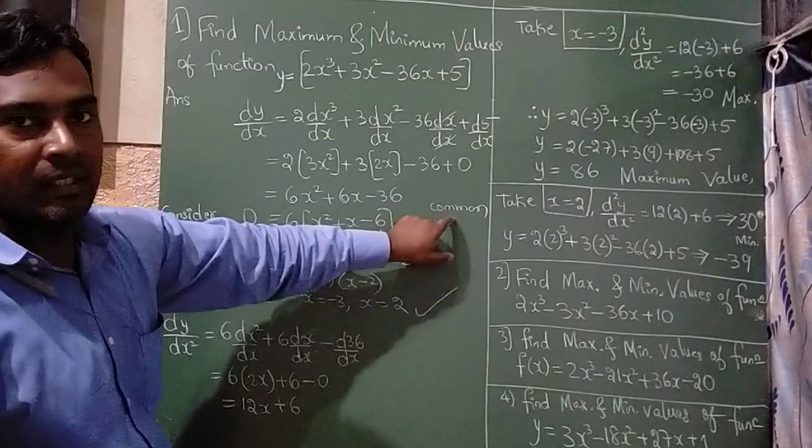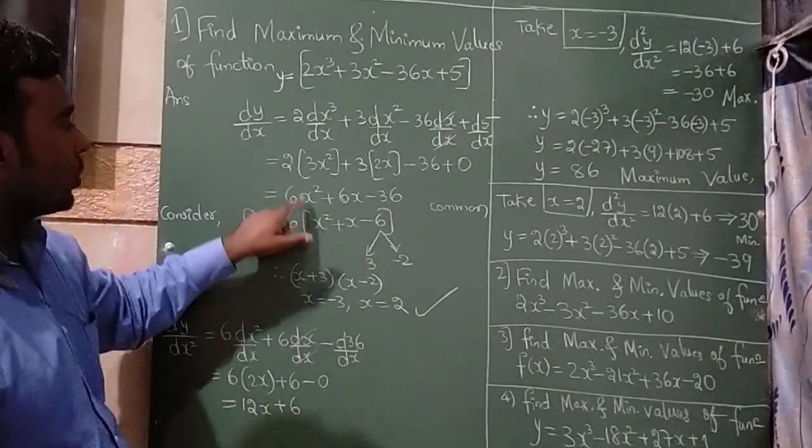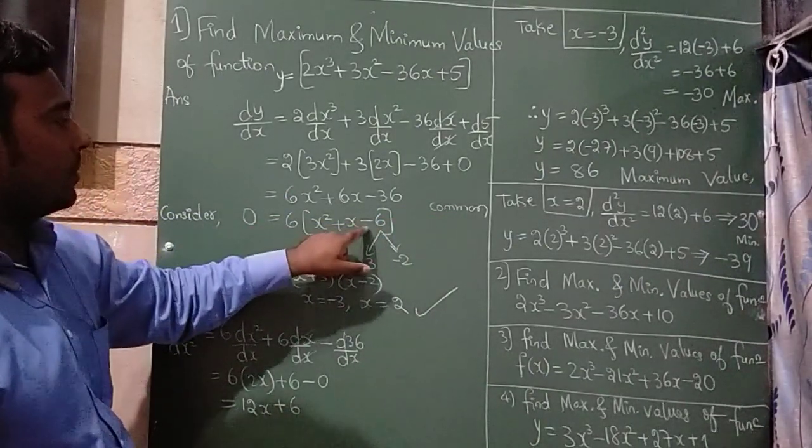In this, I have taken 6 as common, so what is remaining? x² + x - 6.